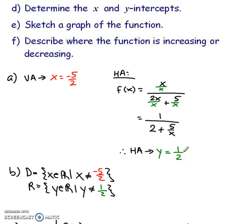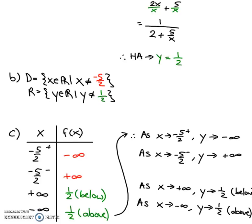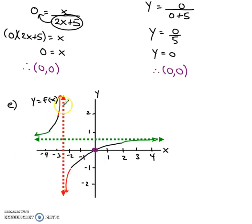The next thing that they asked for was domain and range. X is all the numbers except for your vertical asymptote because obviously your graph can't go there. So x is everything except can't be negative 5 over 2. Your horizontal asymptote tells you what your y can't be. So your y can be anything except where the horizontal asymptote is. So that's the domain and range.